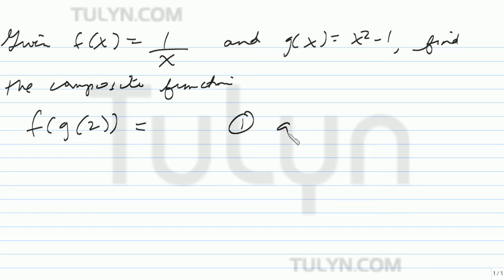So first thing you do is find g of 2. g of 2 means that whatever is inside the parentheses, which is your x, squared and then subtracted by 1. 2 squared is 2 times 2, which is 4, minus 1 is 3. So g of 2 is 3.